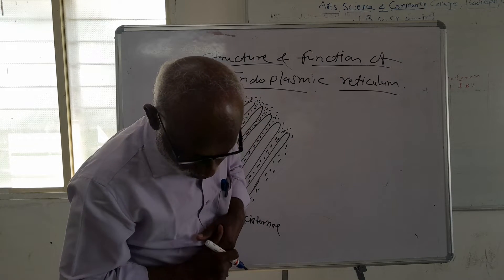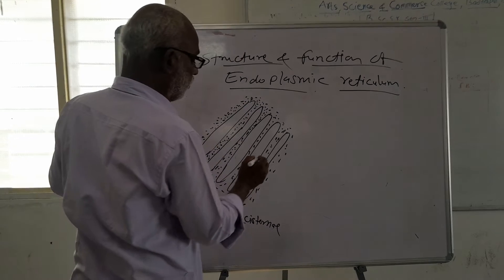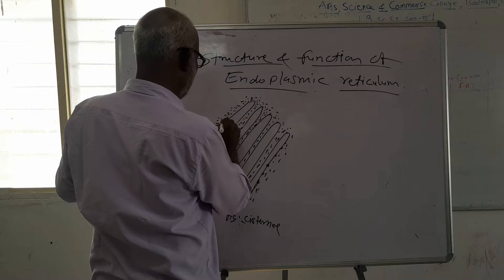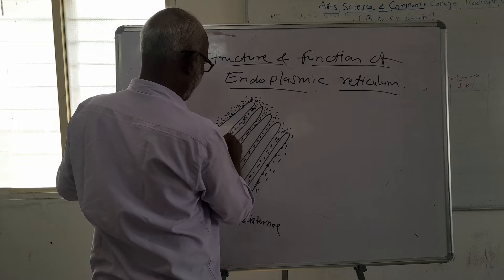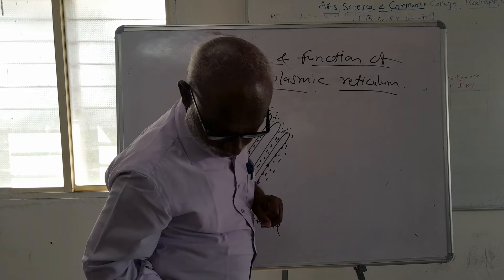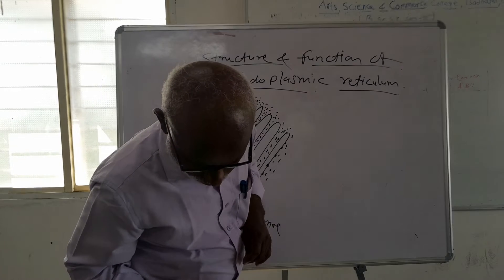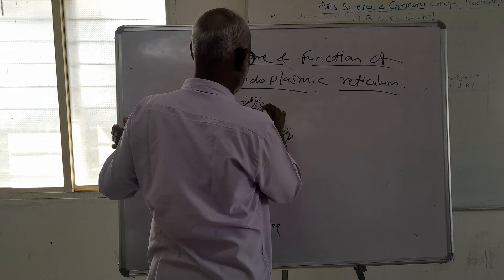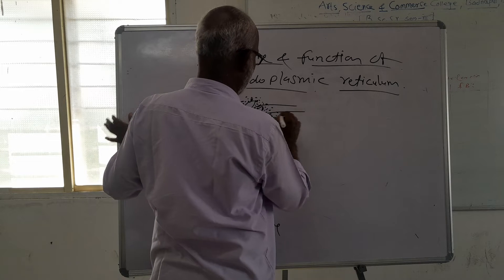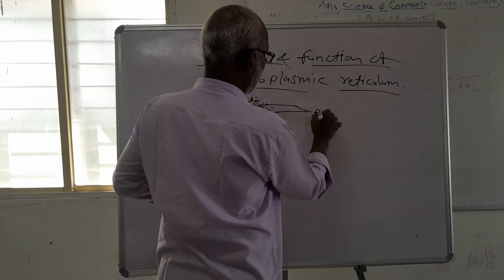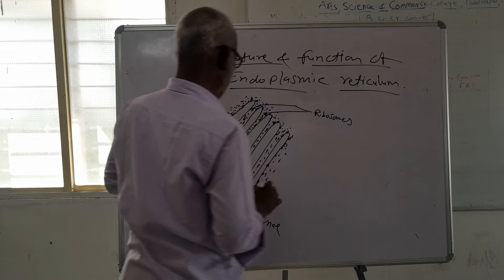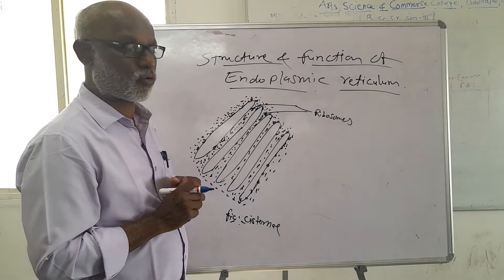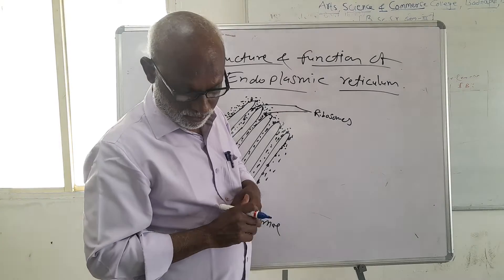On the cisternae, ribosomes are attached. Here is the ribosome attached, and here is the ribosome also attached. Ribosomes are attached on the cisternae. The function of ribosomes is protein synthesis. The next component of the endoplasmic reticulum is vesicles.